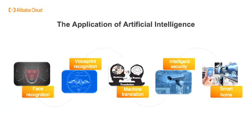Face recognition is mainly used for identity recognition. By using fast face detection technology, the face can be found in real time from the monitoring video image and compared with the face database in real time, so as to achieve fast identification. Voiceprint recognition is a biometric method to automatically identify the speaker according to the speaker's physiological and behavioral characteristics, which can be used in non-contact biometric recognition. Machine translation uses the power of the machine to automatically translate text of one natural language into another language.